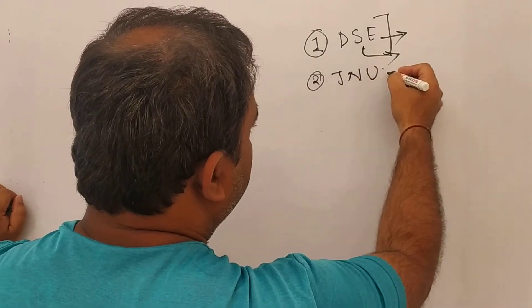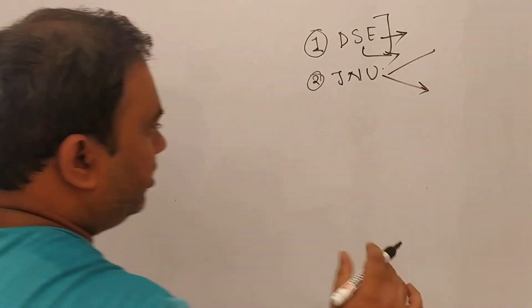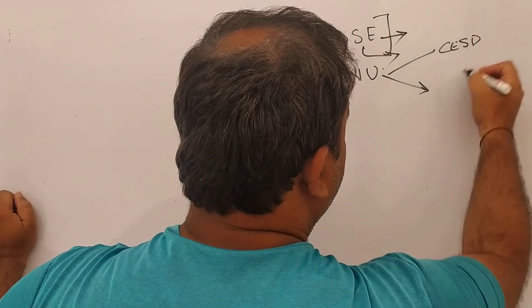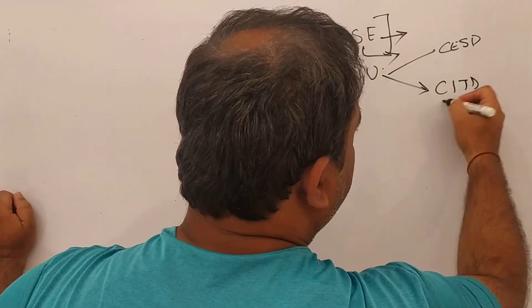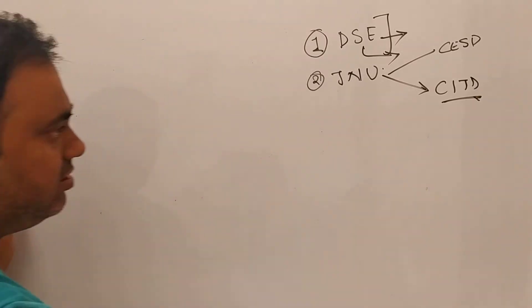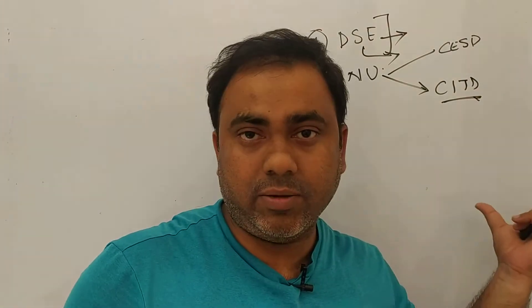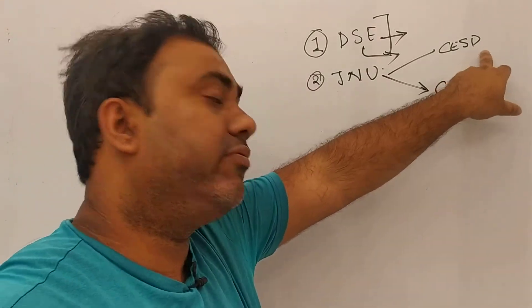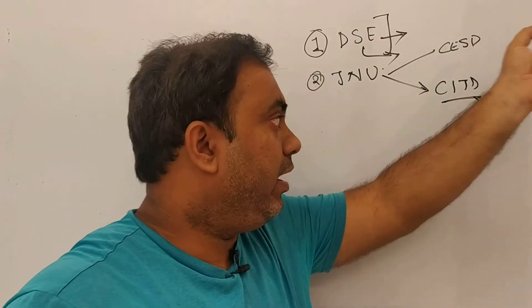Second, JNU. JNU has two different MA economics programs, one is CESP, CITD. CITD is Centre for International Trade and Development, so they focus on international economics. The entrance examination of CITD is a bit difficult than that of CESP.